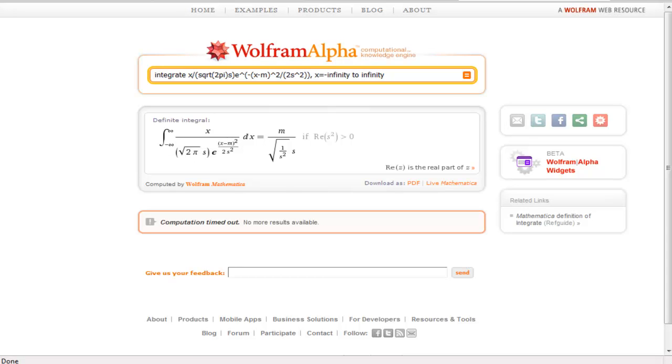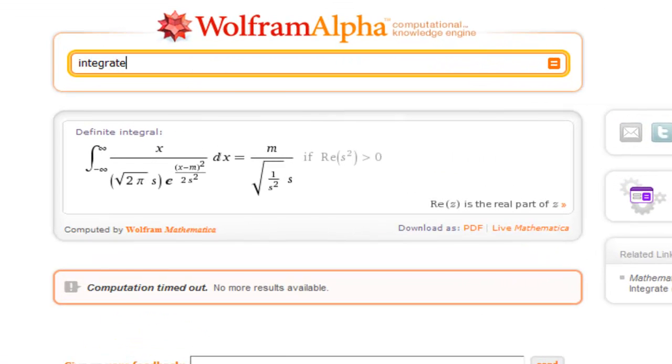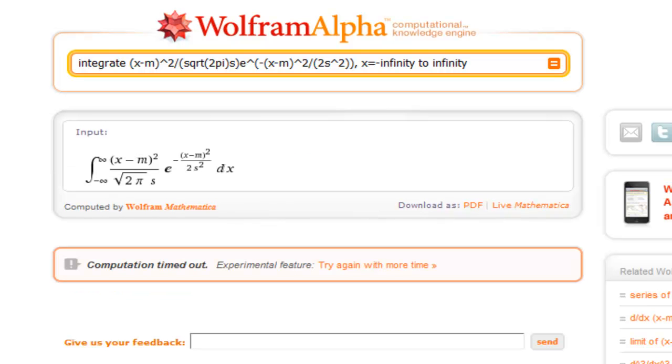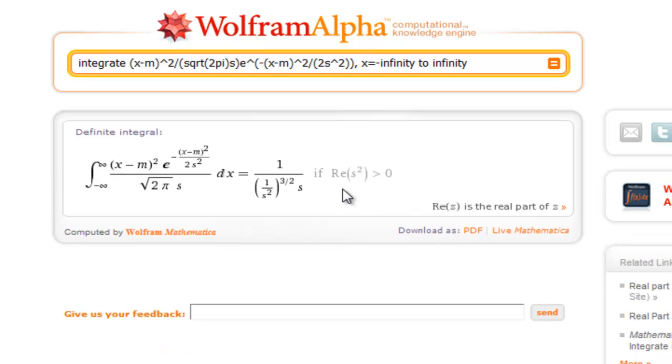Okay, and we'll pull up Wolfram Alpha here to do this integral for us. And we are going to integrate x minus m squared divided by the square root of two pi sigma, I'm going to denote that by s, times e to the power of negative x minus mu squared divided by two sigma squared. And we're going to integrate that from x equals negative infinity to infinity. Again, it turns out this is a harder computation than the first one was. And it's going to take a lot of time for Wolfram Alpha to be able to do it. It takes a lot of time to do this computation by hand. And let's see what we end up with. It turns out the expectation is a sub-calculation of this one.